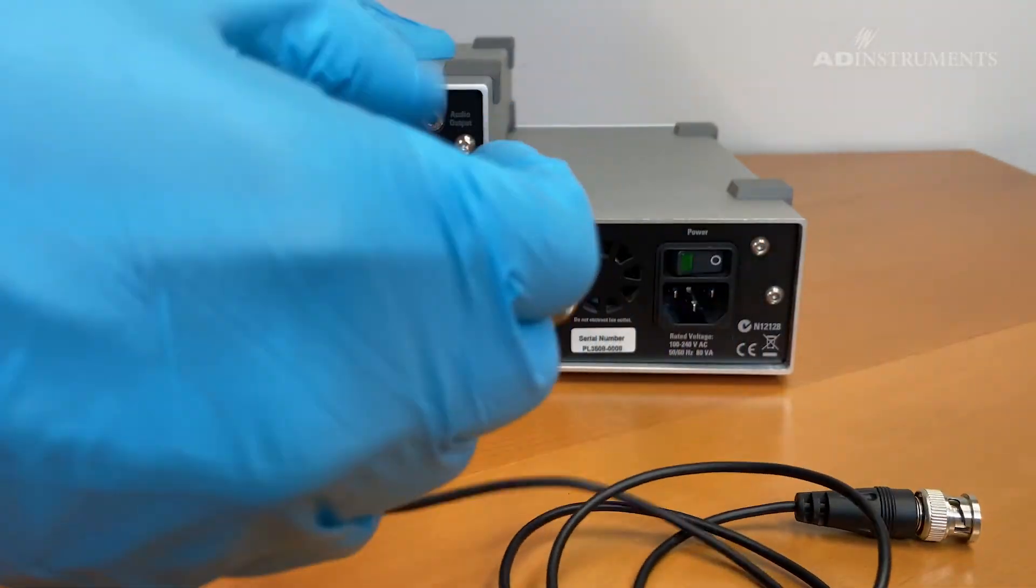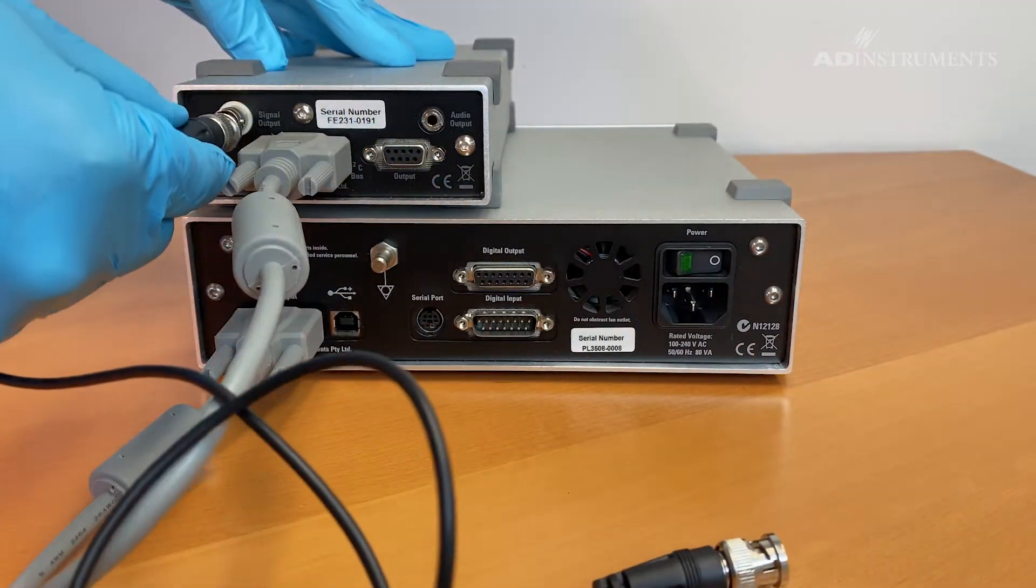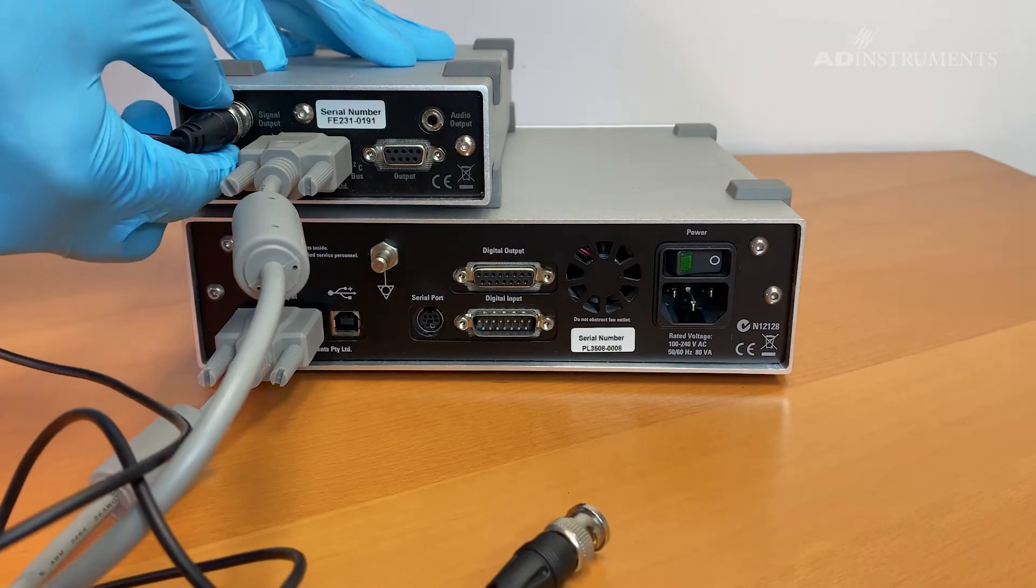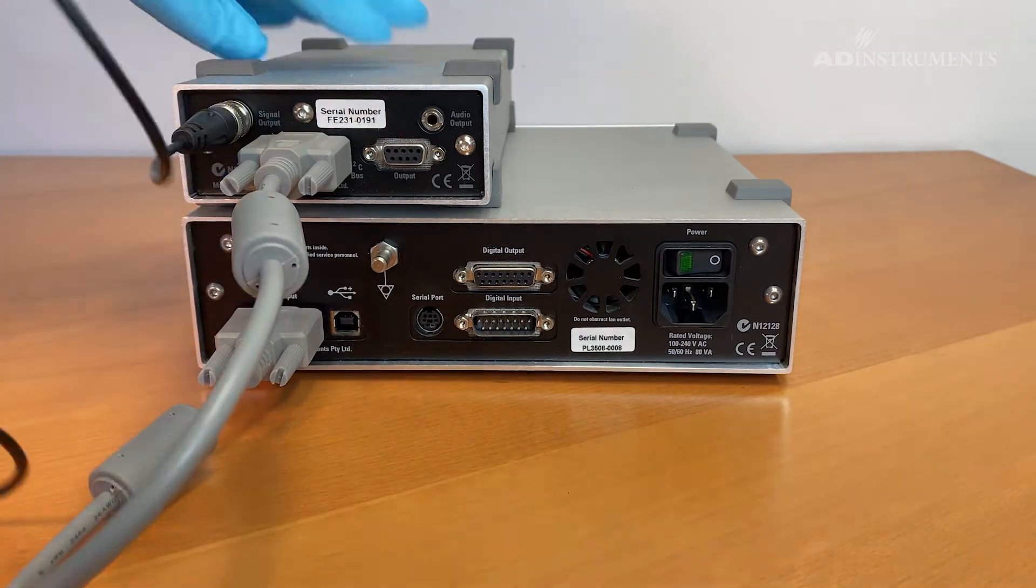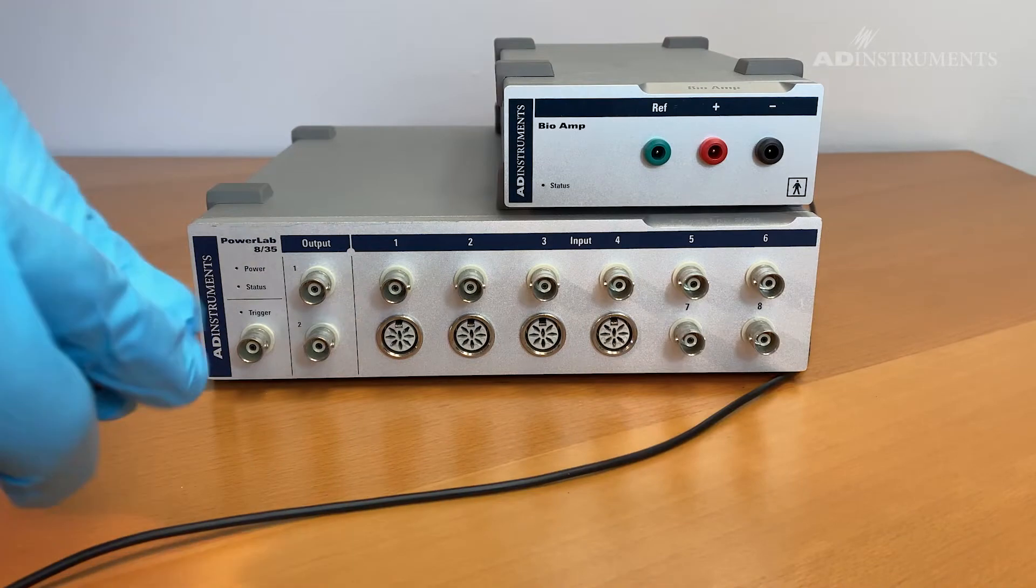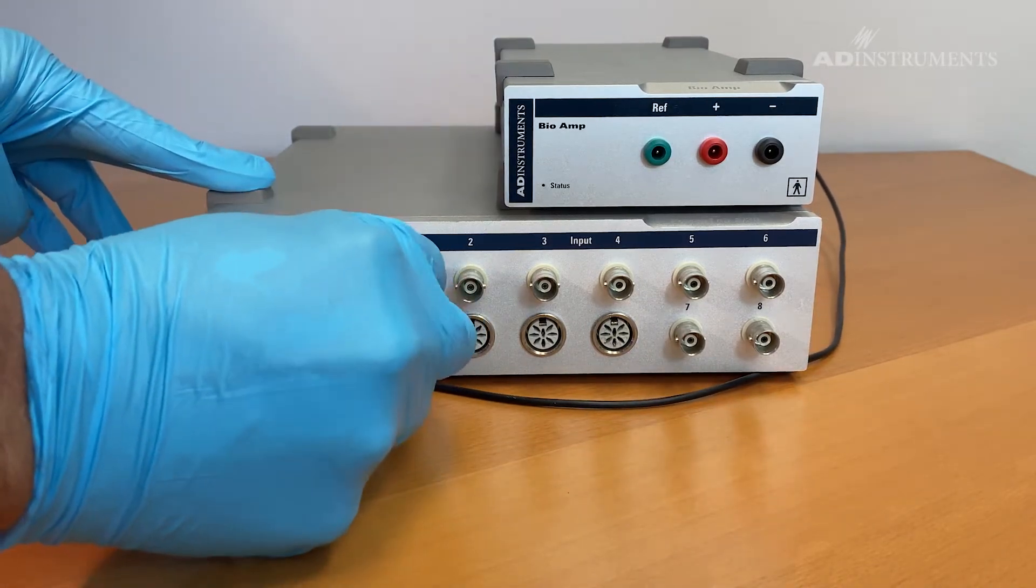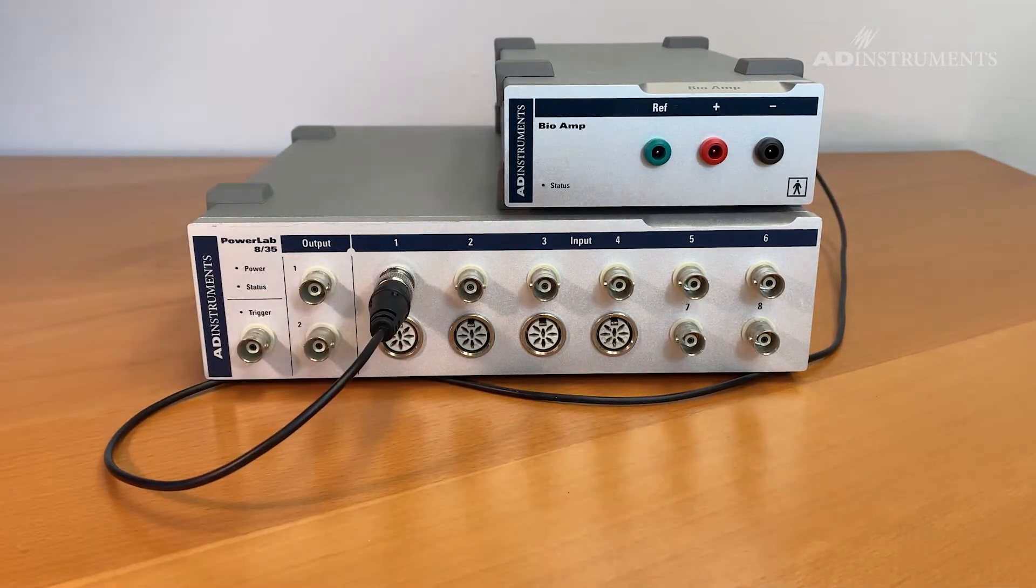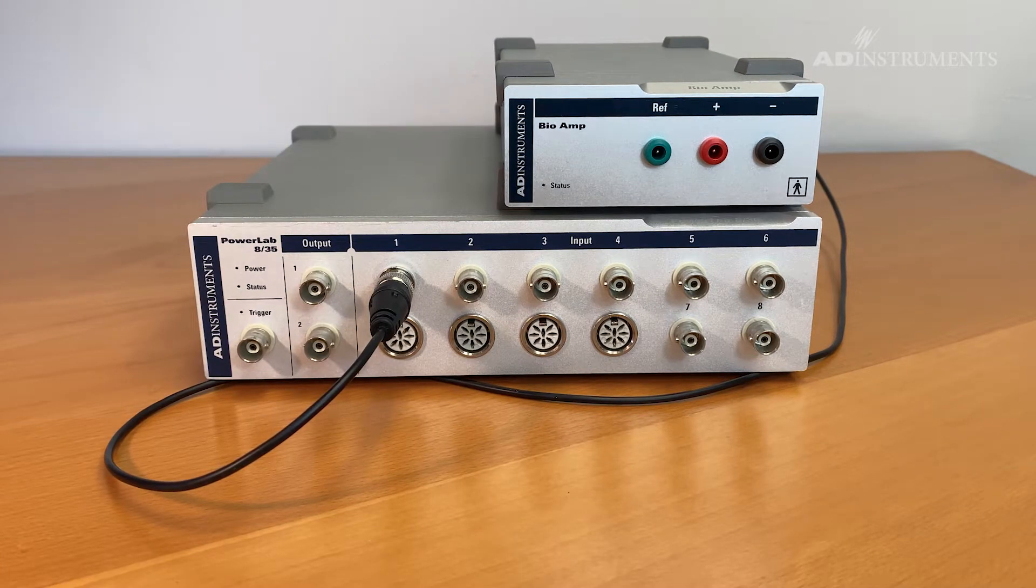Also connect the BNC cable to the signal output on the back of the bioamp. Connect the other end of the BNC cable to one of the channels of the power lab, keeping in mind that lab chart will recognize the bioamp on the channel that the BNC cable is connected to.